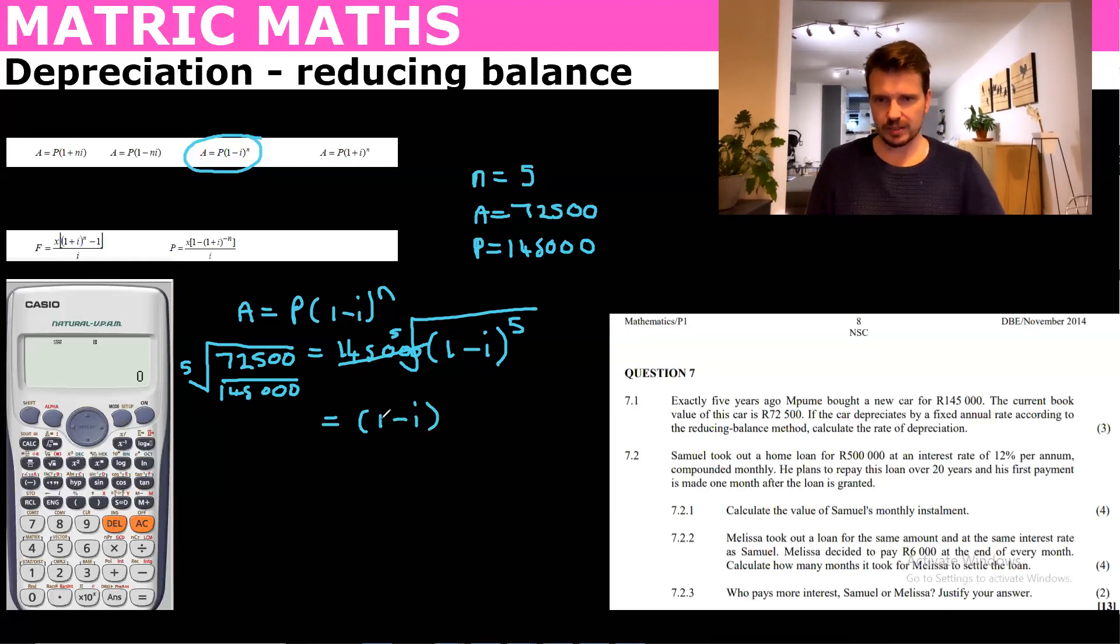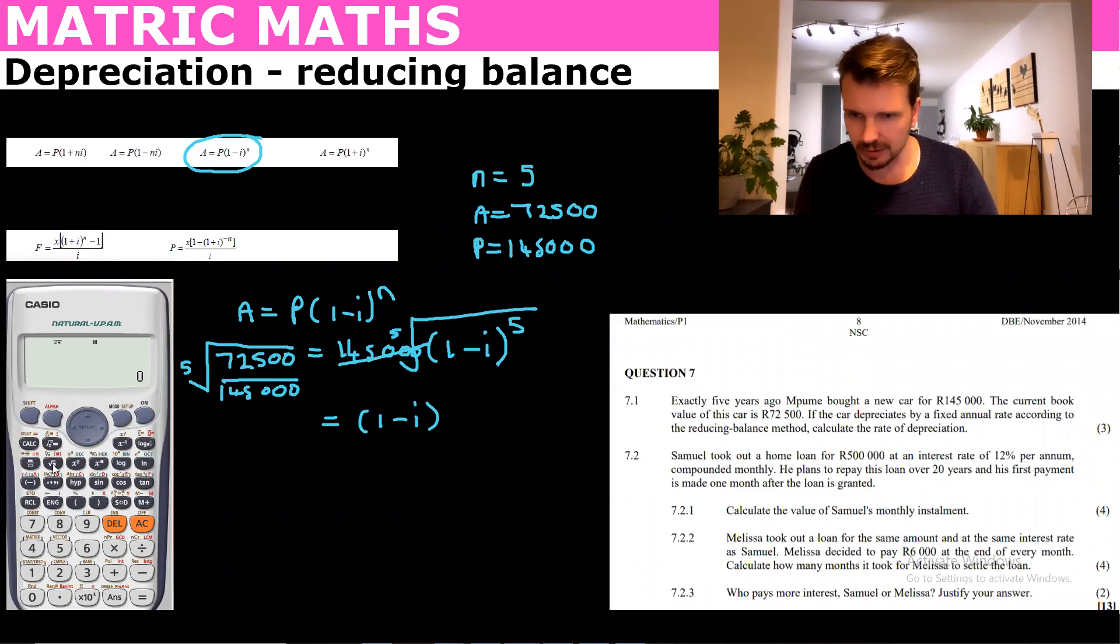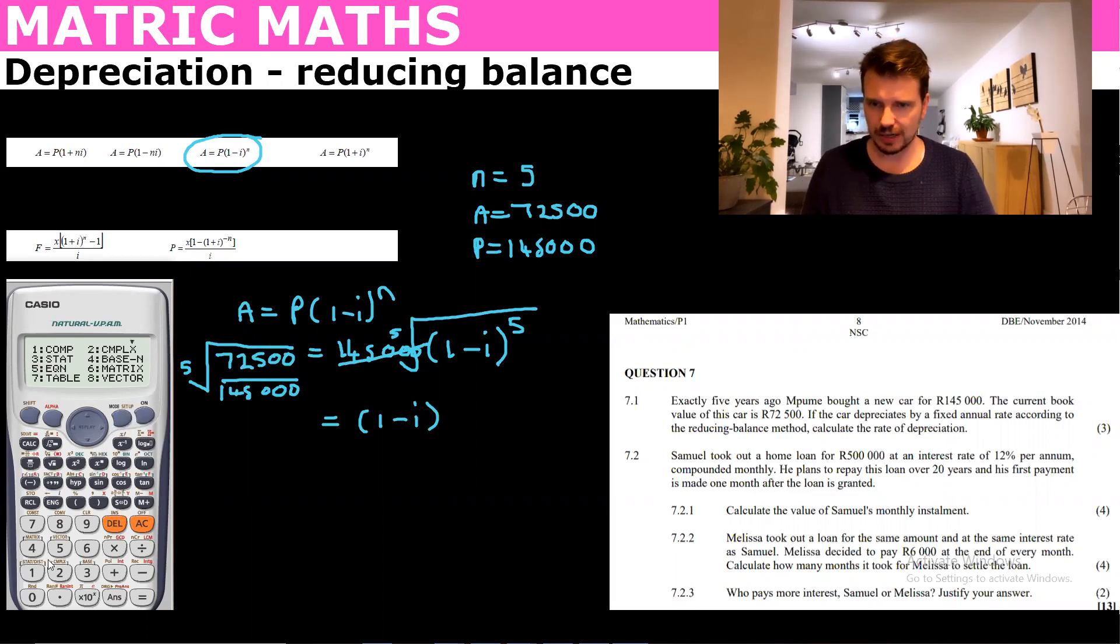So let's put that into our calculator. We've got the square root button and inside the square root we've got a fraction. I need to just get to the right mode. If you see that where it's not giving you the fraction, just go to the computational mode and then we can put that in.